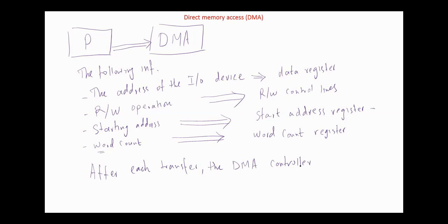After each transfer, the DMA controller increments its start address register and decrements its word count register. The word count register is checked for zero after each transfer. After completing the transfer, the DMA removes its bus request and informs the CPU of the termination by means of interrupt.